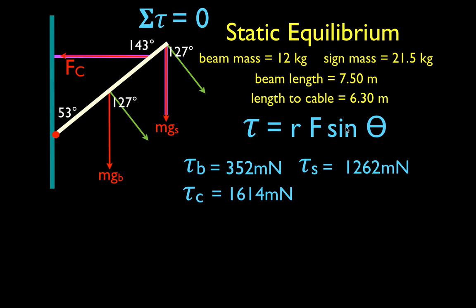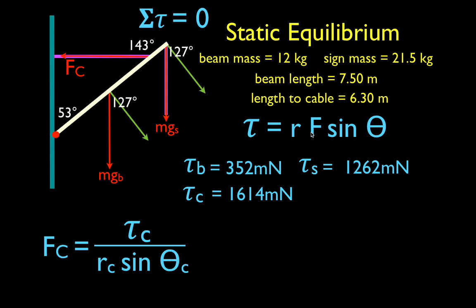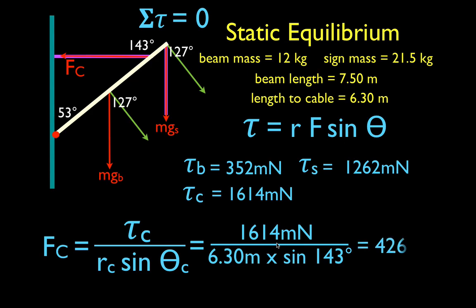Now we set the cable torque equal to 1614 newton·meters and solve for the force. The force from the cable equals the torque divided by R times sine of theta for the cable: 1614 divided by 6.3 times sine of 143 degrees. Doing the math, the force from this cable is 426 newtons.